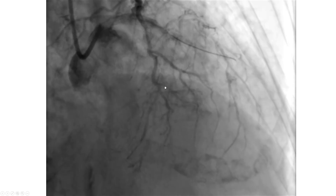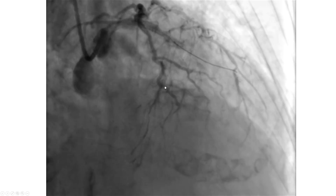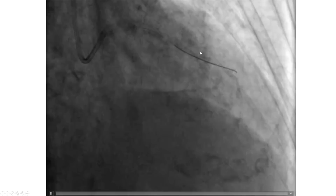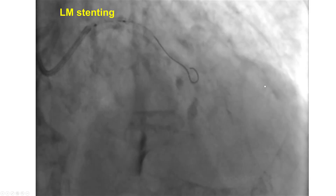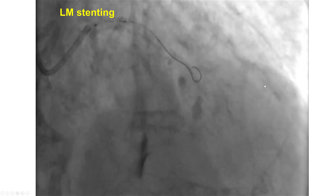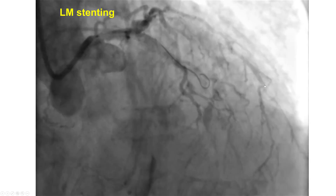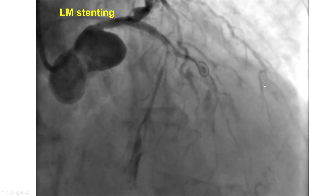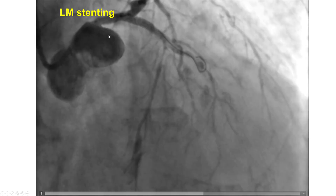Unfortunately, during attempts to cross the lesion, which was very challenging, there was acute vessel closure. We lost flow all the way to the distal LAD as well as the diagonal branch. At this point the patient started becoming hypotensive. During attempts to advance another wire and regain access in the distal lumen, there was a dissection of the left main which was treated with a stent.